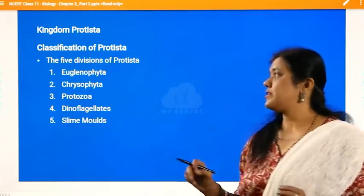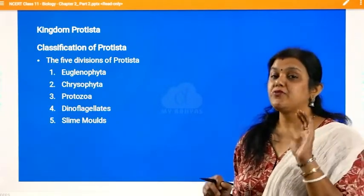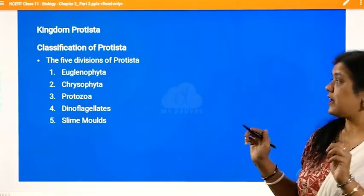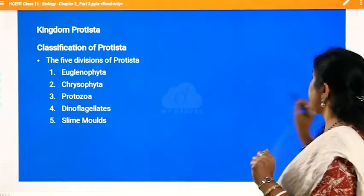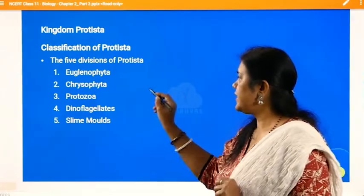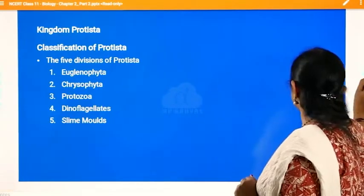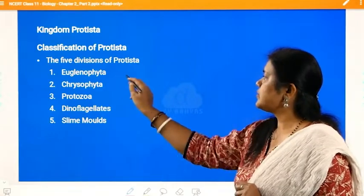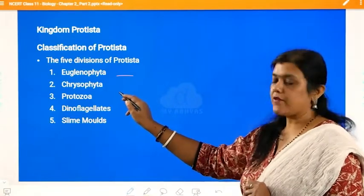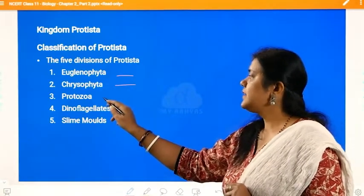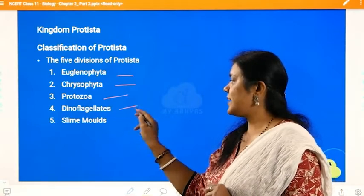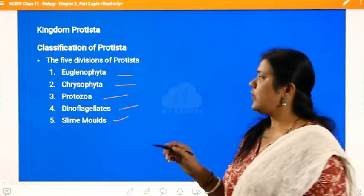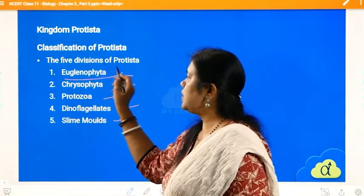When we talk about protista, we are going to discuss its five divisions: the first one is euglenophyta, the second one is chrysophyta, third is protozoa, then comes dinoflagellates and the slime molds. We are going to talk about each one of these divisions individually one by one.